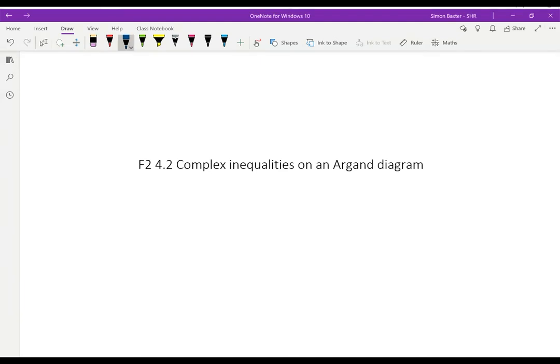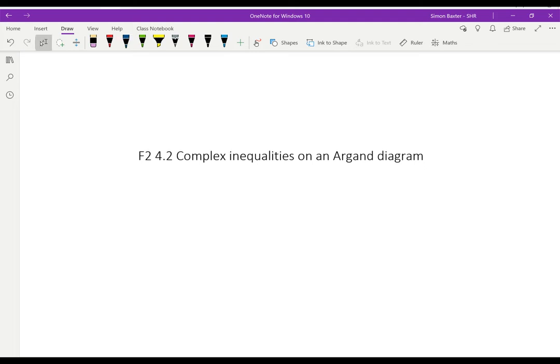In this video I'm going to look at regions on an Argand diagram or complex number plane which are defined by complex inequalities. Let's start by looking at the inequality mod z minus 3 minus i is less than 4.